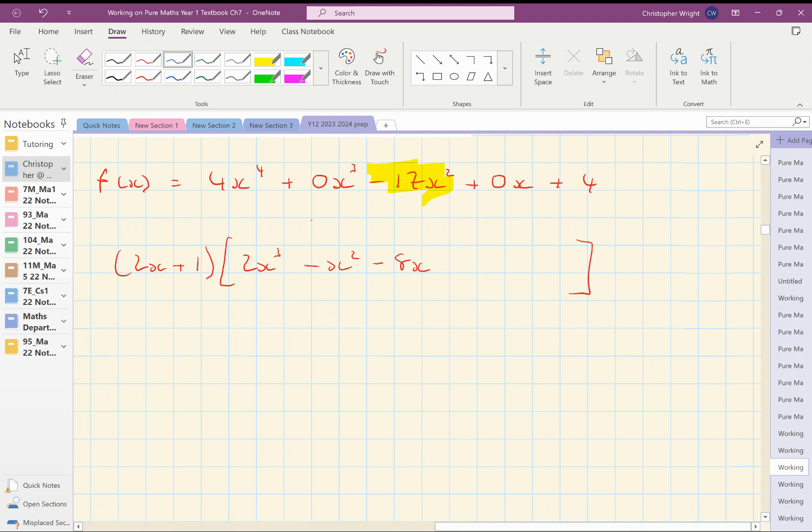So I need plus 8x to take me back to 0x because I need 0x in the original polynomial. That means I'm going to write plus 4 here because 2x times 4 gives me the plus 8x. And if I write plus 4 there, I'm going to end up with 1 times 4, which is fine because I want to end up with 4 at the end.